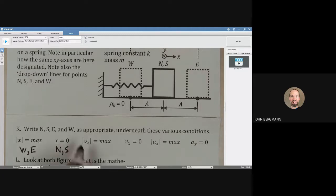Vx is a maximum at points north and south. Vx equals zero at points west and east. The acceleration in the x direction is a maximum at points west and east. And the acceleration in the x direction is zero at points N and S.